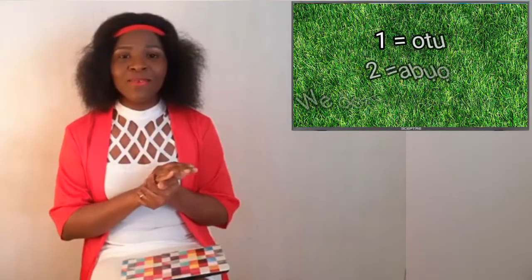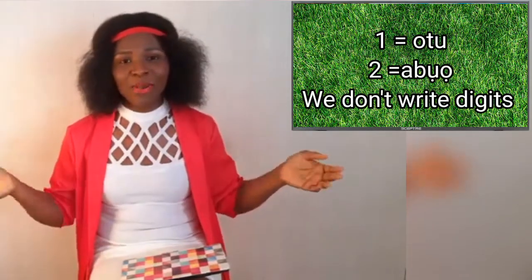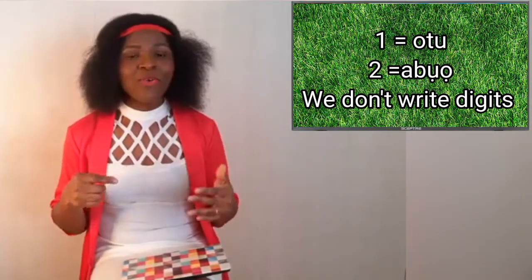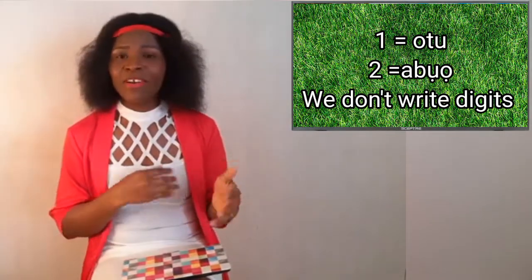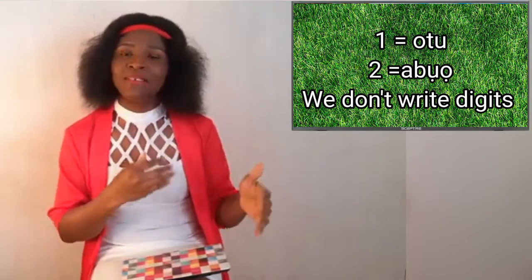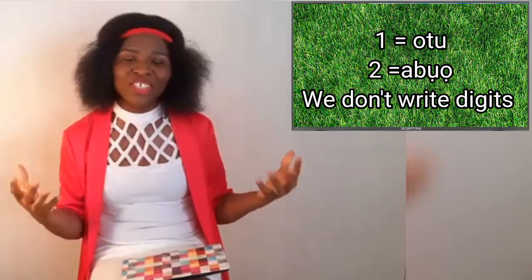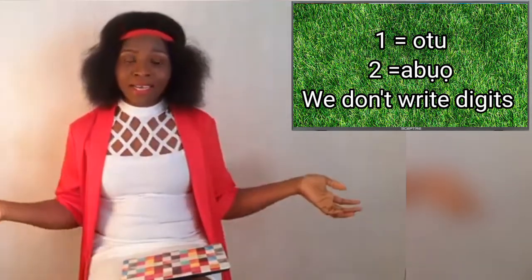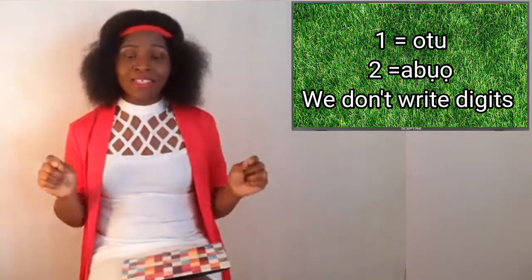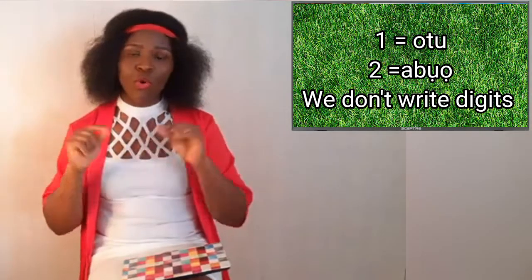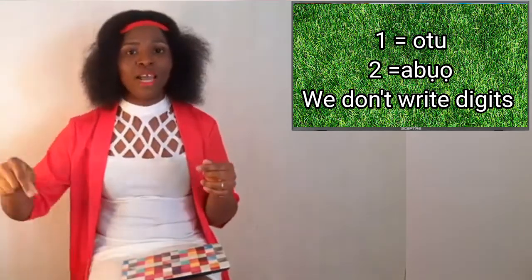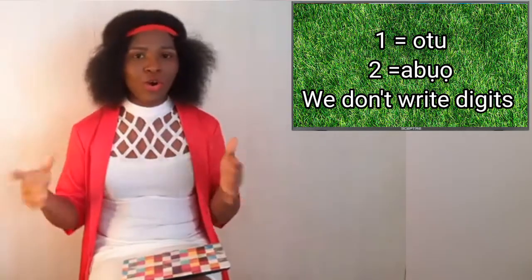Another thing I want to mention is numbers in Igbo. When we are counting numbers in Igbo, just like English has one, two, three, four, five — Igbo does not have digits. The way we write Igbo now is not the original Igbo way of writing. So for that reason, Igbo doesn't have digits. If you say 'one' with your mouth and you want to write it, then you must write it out in words — you don't use numerals when you're writing Igbo.